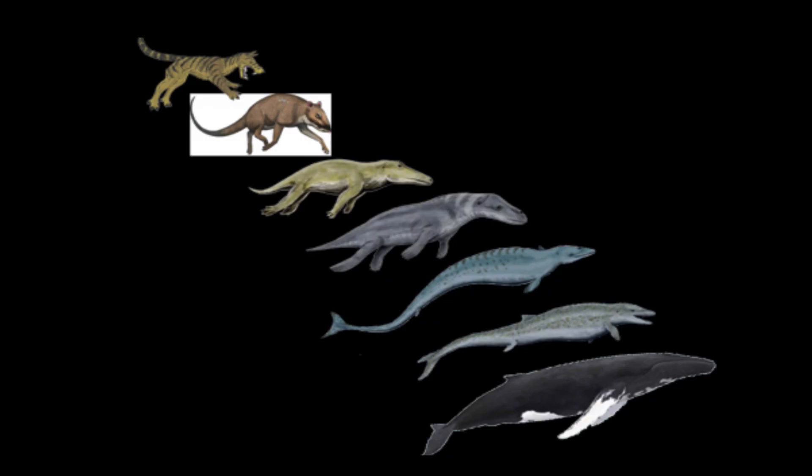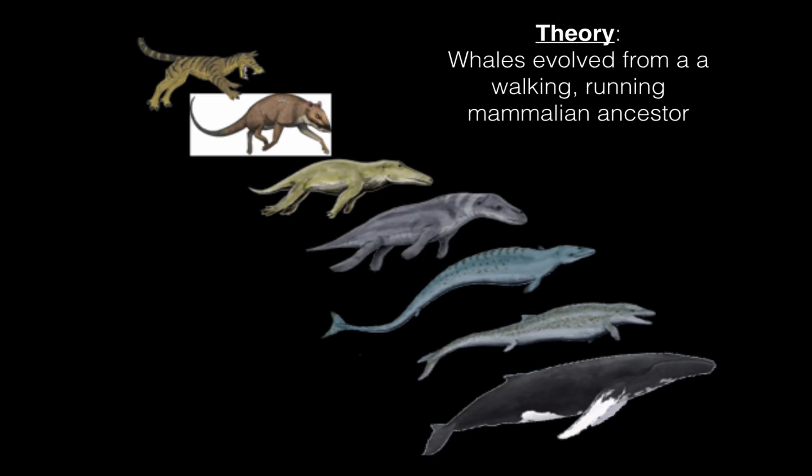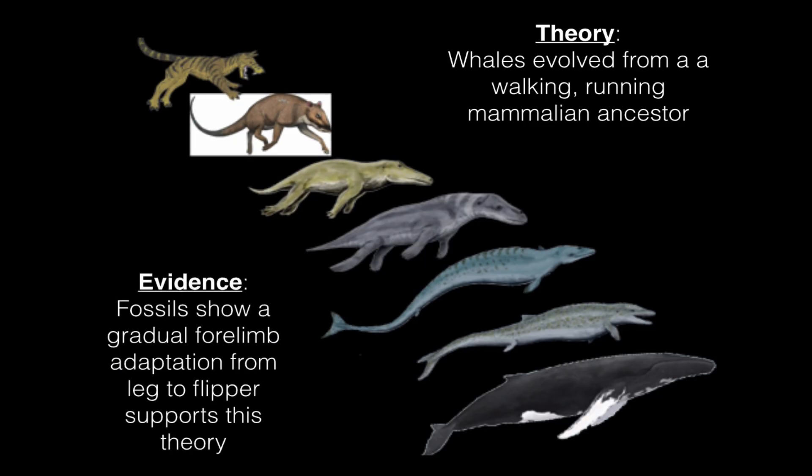This can be seen in an even more extreme example in the evolutionary theory of how we get whales. The theory is that whales have evolved from a walking, running mammalian ancestor. And over evolutionary time, this animal became more and more adapted for an aquatic existence. If you're trying to catch prey in water, you need to be able to swim fast. And if you look in this progression — these are all reconstructions from fossil evidence — we can see that these whale ancestors gradually had their forelimbs evolve into flippers as they became adapted for moving in water, and their hind limbs disappeared completely. The evidence here supports the theory. Fossils show a gradual forelimb adaptation from leg to flipper, which supports the theory.